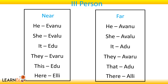Now let's see the difference between third person near and far. Near — he: iwanu. Far — he: avanu. Near — she: iwalu. Far — she: avalu. Near — it: idu. Far — it: adu. Near — here: illi. Far — there: alli.